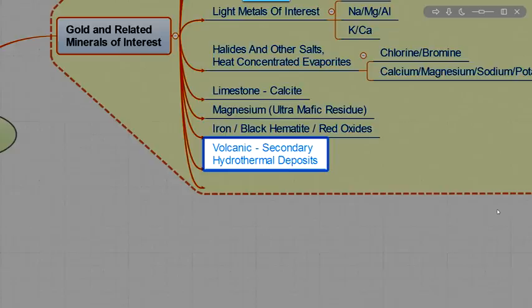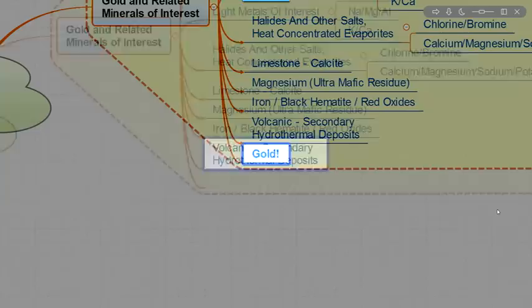A lot of these things are due to volcanic deposits, which may have secondary hydrothermal deposits embedded inside of them that contain gold or gold-bearing minerals or some of these metals we've talked about. And, of course, gold. This all ties together with gold.